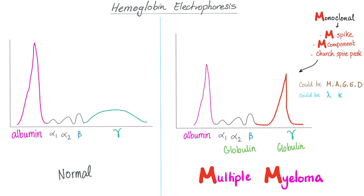In multiple myeloma, all of your resources are going to make gamma globulin — we call this the M spike. But please don't say it's the M spike, therefore the patient has too much IgM. It's mostly IgG or IgA. Since all resources are going to make gamma globulin, what's going to happen to albumin? It will be lower than normal.